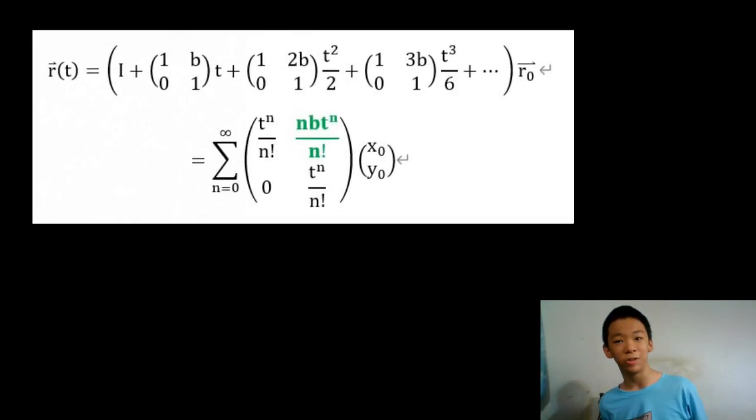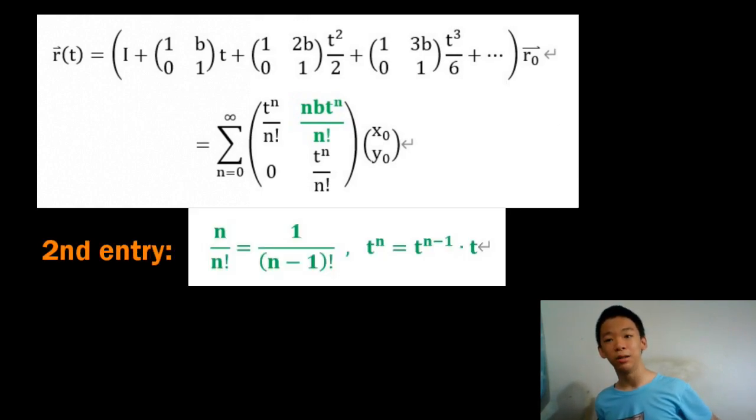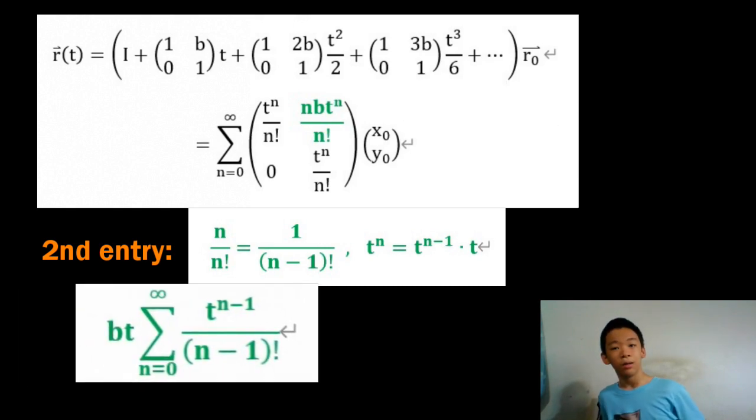Notice that the first and fourth entry both evaluate to e to the t, while the third entry is still 0. As for the second entry, write n over n factorial as 1 over n minus 1 factorial and separate t to the n into t to the n minus 1 times t, then pull the b times t out.